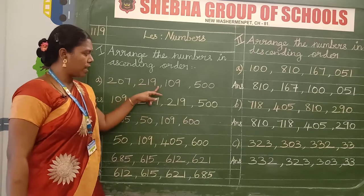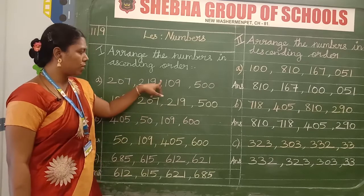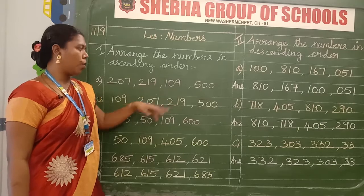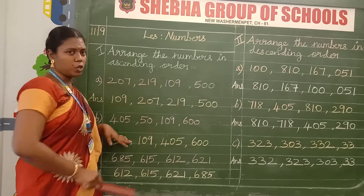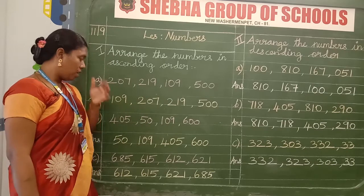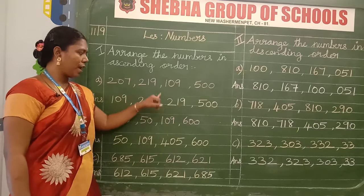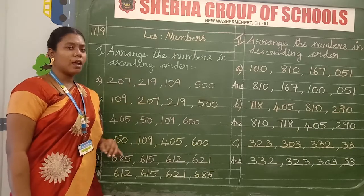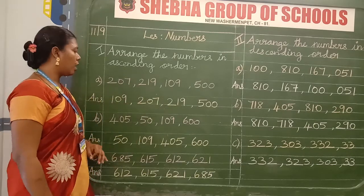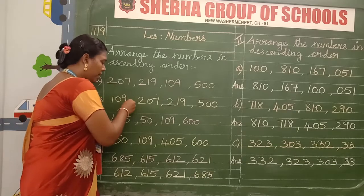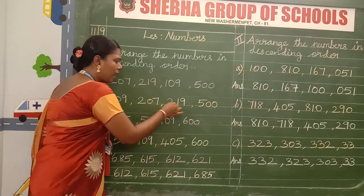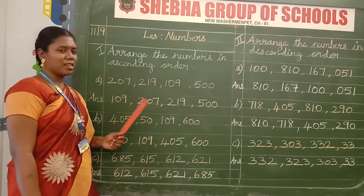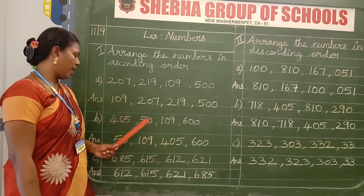After finishing one number, just leave a finger gap, write the next number, and put a comma. After finishing the next number, leave the finger gap again and write the following number. This way you write every number. Important: you must leave a finger gap between each number, and don't forget to put the comma. This is the ascending order — you must write this way.